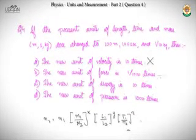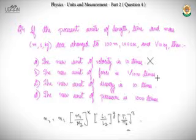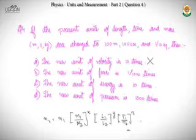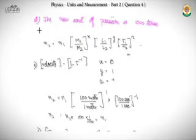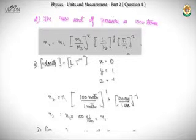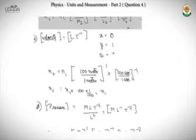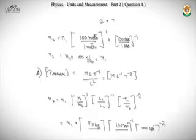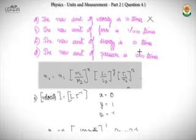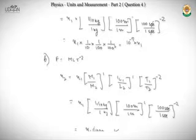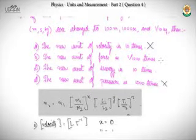To recap question four: we had to find the new numerical values of velocity, force, pressure, or energy when base units change from (1m, 1s, 1kg) to (100m, 100s, 1/10 kg). Using the conversion formula, velocity stayed the same, pressure became 10⁻⁷ times (not 10⁻³ as stated in option D), and force became n₁/1000 — matching option B, which is the correct answer.